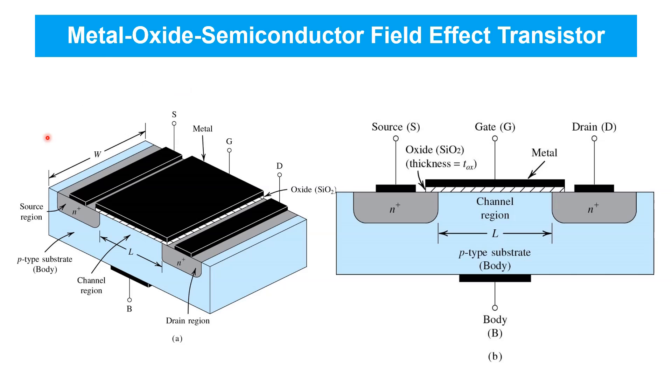Shown here is an example of a MOSFET, and on the right is its cross-sectional side view. Now, in this particular MOSFET, you see that there are two regions that are doped N-type, separated by an intervening region that's doped P-type.